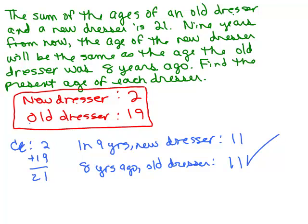By the way, if you had done this whole problem and let the old dresser be X and the new dresser be 21 minus X, you would have gotten the same answer. Your answer for X comes out different because you called X something else, but in the end the new dresser should still be 2 and the old dresser would still be 19. Let me set that up so you can see how it would look if you changed which one you let X be.